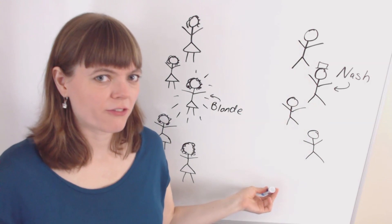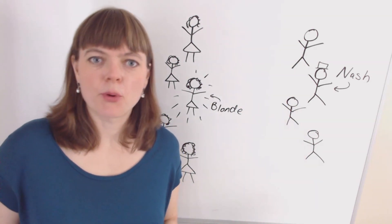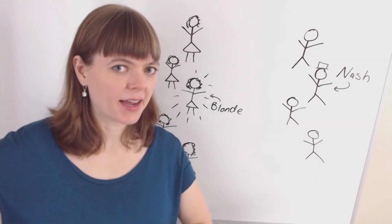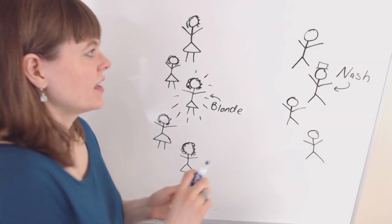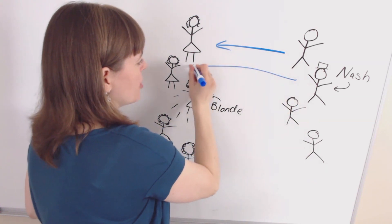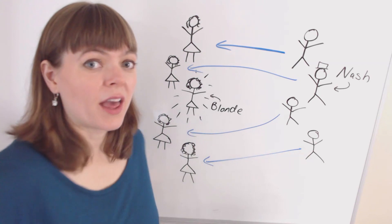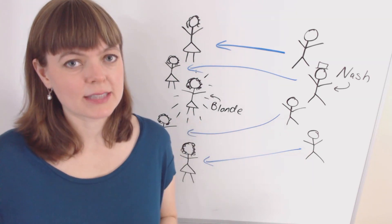Now the guys are all thinking about going for the blonde themselves, when John Nash interrupts them with a seemingly brilliant idea. His idea is this: each of the men should go for the brunette women, leaving the blonde alone. And there's a clip where she looks really sad.